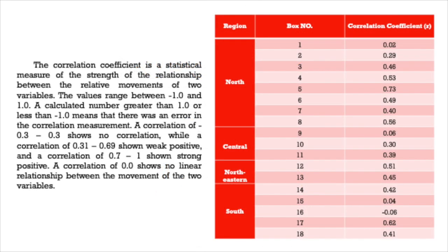The correlation coefficient is a statistical measure of the strength of the relationship between the relative movements of two variables. Values range between minus 1 and 1; a value outside this range indicates a measurement error. A correlation of minus 0.3 to 0.3 shows no correlation, while 0.31 to 0.69 shows weak positive correlation, and 0.7 to 1.0 shows strong positive correlation. A correlation near 0.3 indicates no linear relationship between the movements of the two variables.